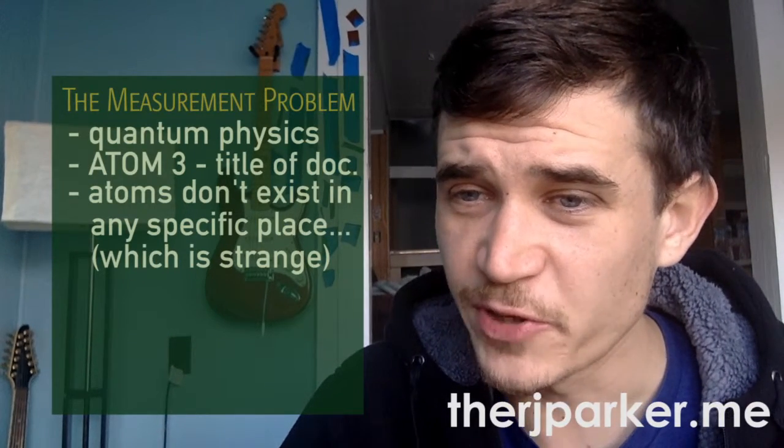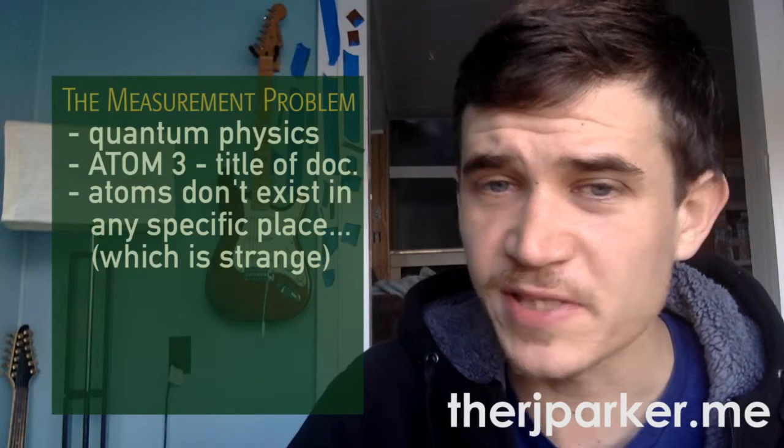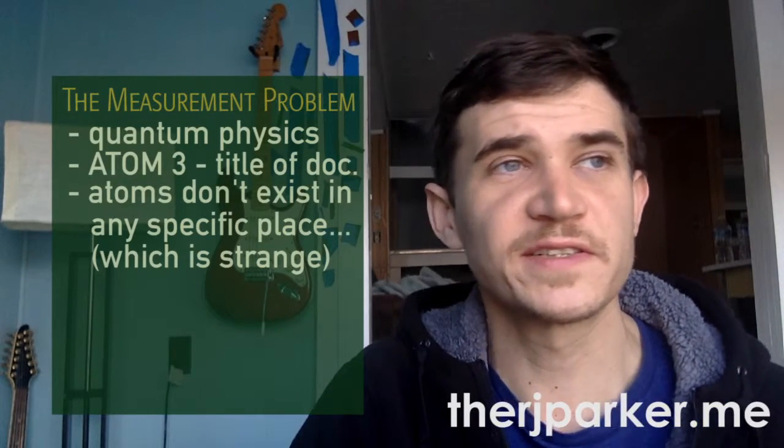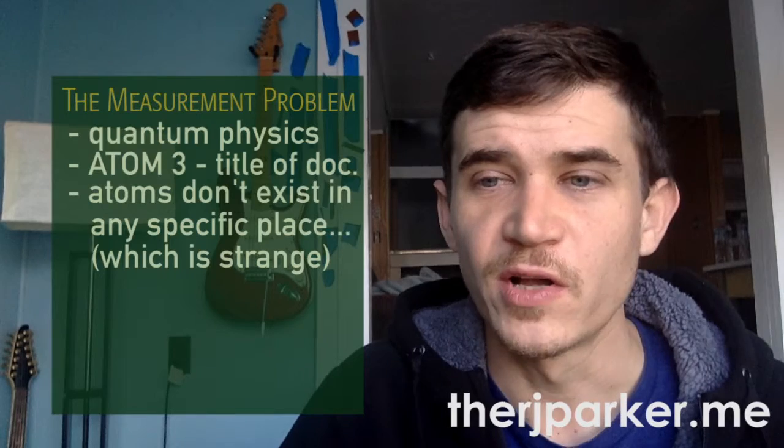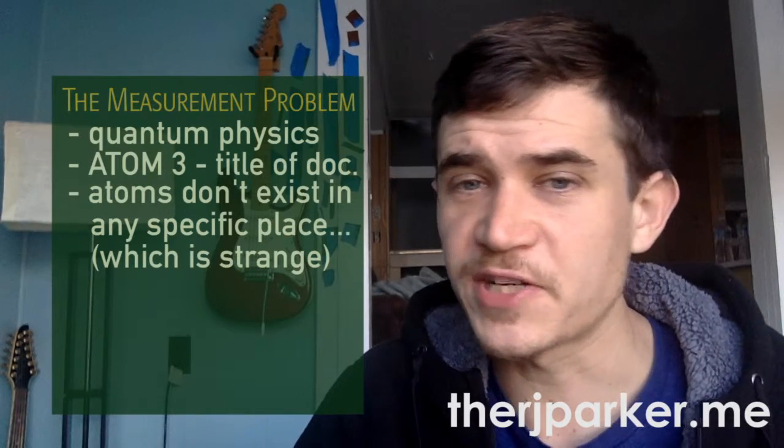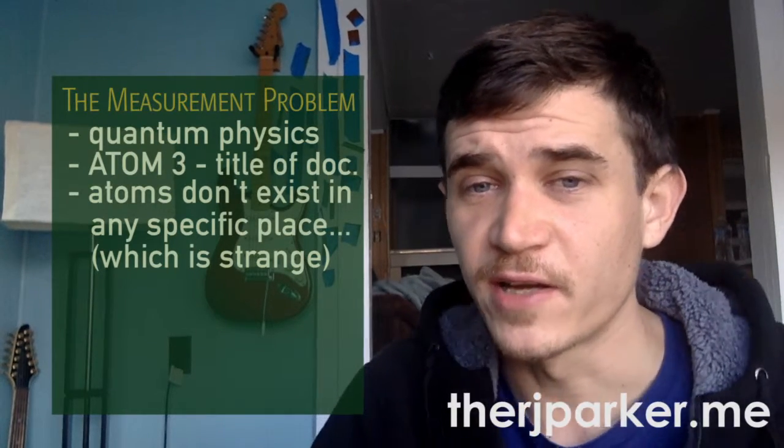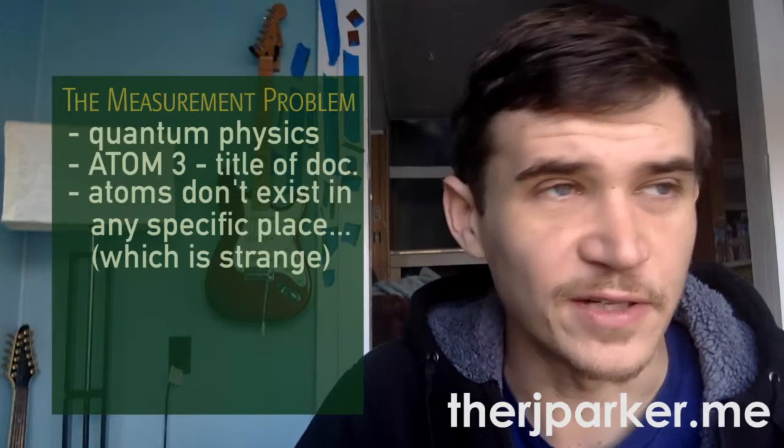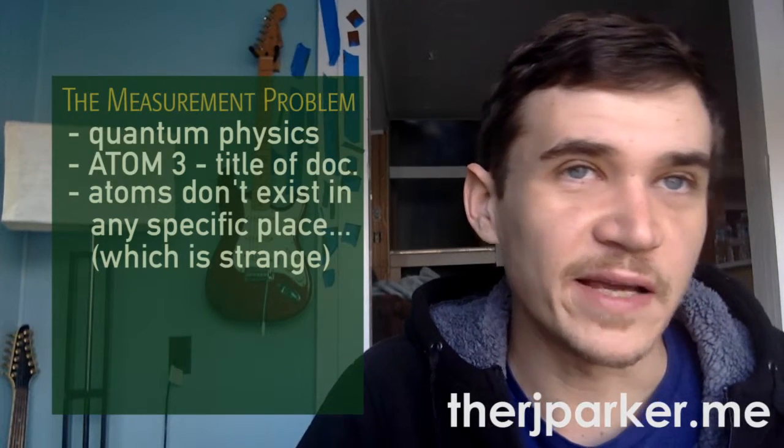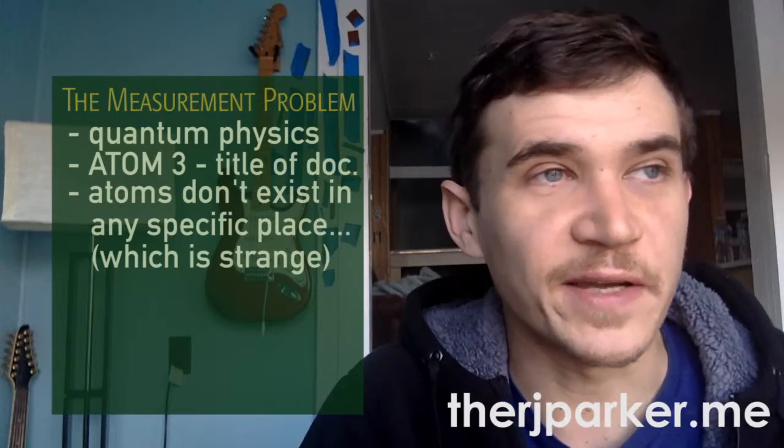Back to the measurement problem. Counterintuitive, but the science suggests this is real. Basically, when you're trying to measure the position of an atom with our most precise tools, like we're looking into super powerful microscopes, we find that the location of the atom exists more in a field or an array rather than a specific place.